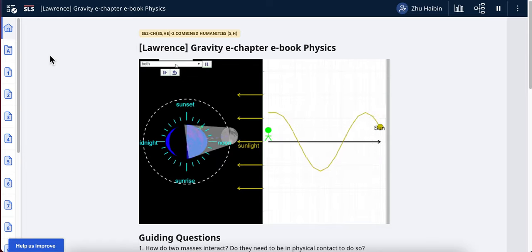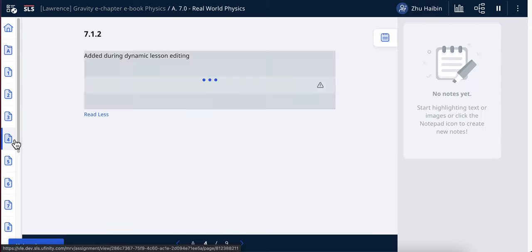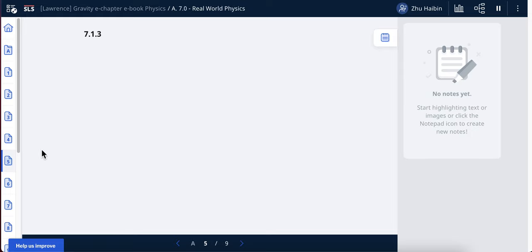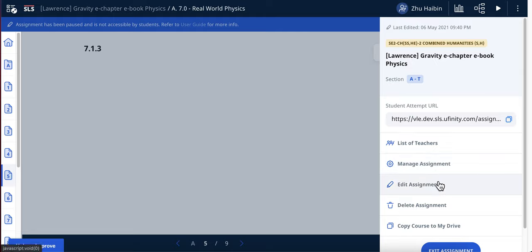If a student gives you feedback in the middle of a course that some pages are missing certain things, you could quickly come to the page - let's say page five - where things are missing. You could pause the course or assignment and come to the three dots to edit the assignment.